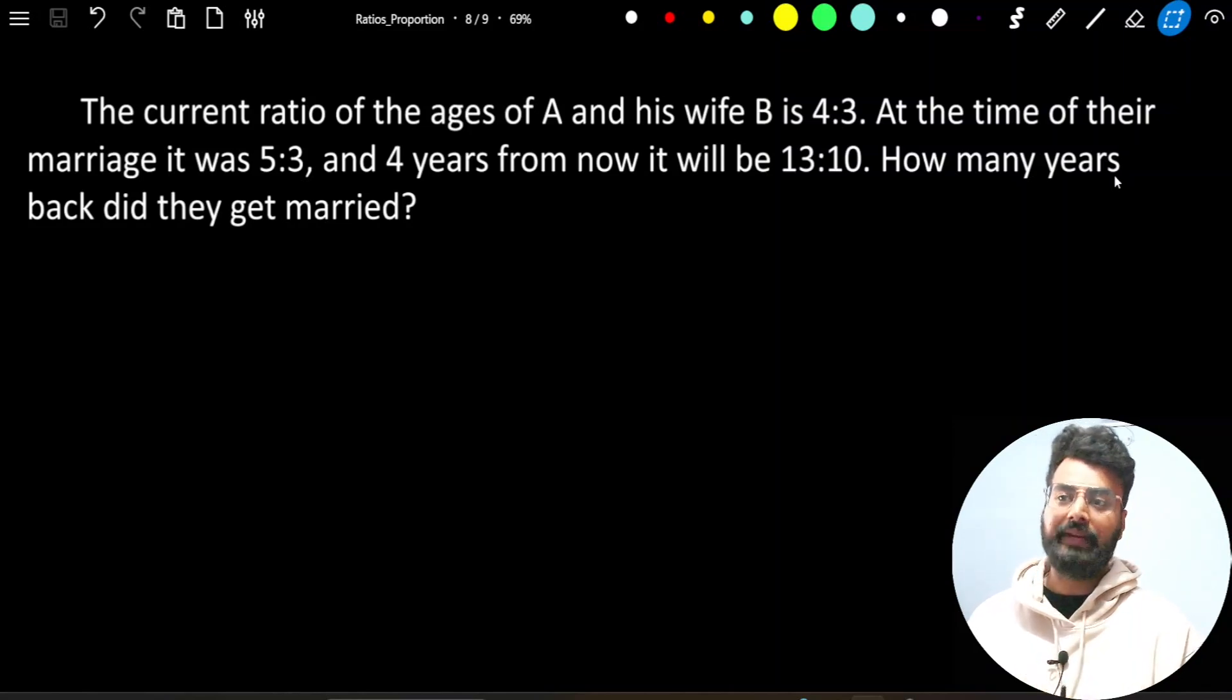The current ratio of the ages of A and his wife B is 4:3. At the time of their marriage, it was 5:3, and 4 years from now, it will be 13:10.